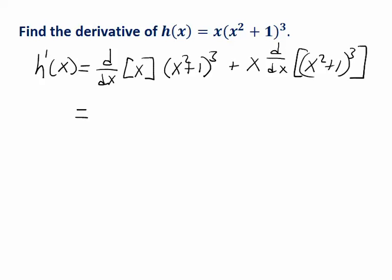So in the next step, I have the derivative of x, which is one times the quantity x squared plus one cubed, plus x times the derivative of this next part.